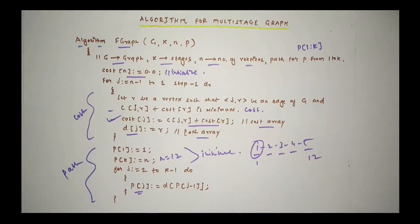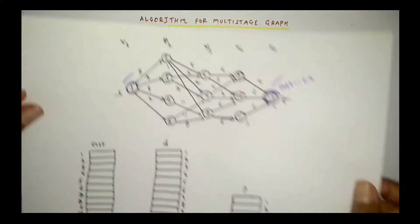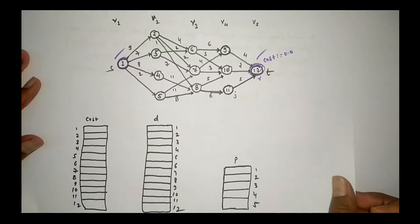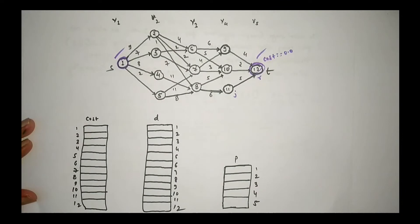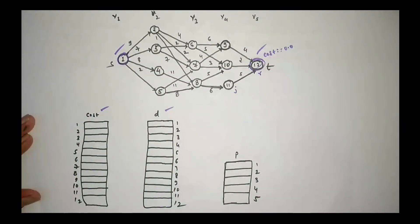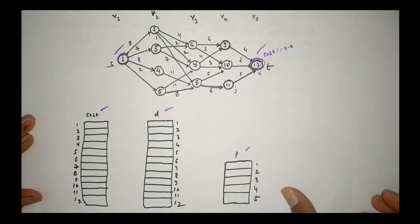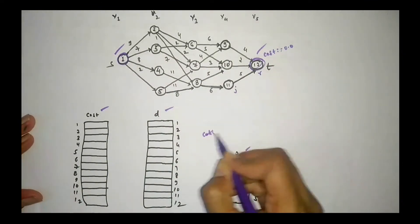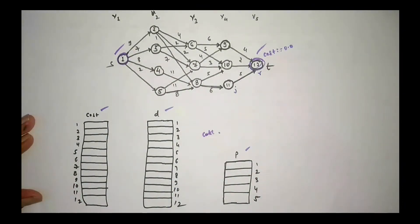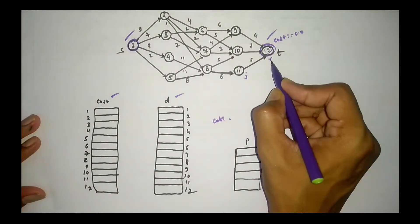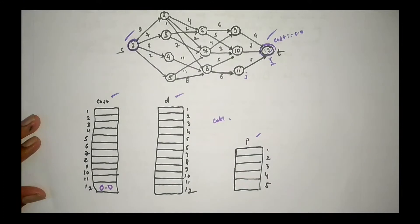We will explain what we do with this graph. As per the algorithm, we have created three data structures: one for the cost, one for the nearest vertex to reach, and one for the path length. This graph has 12 vertices, so we have 12 divisions. As per the algorithm, the last vertex has cost 0.0.